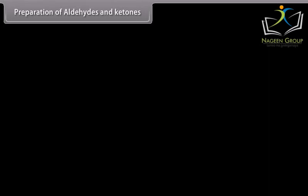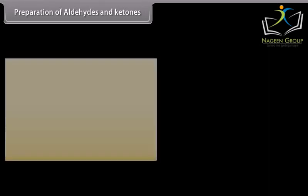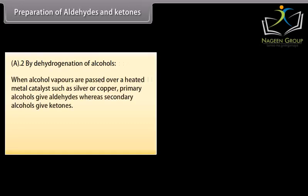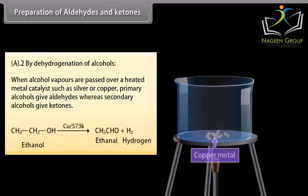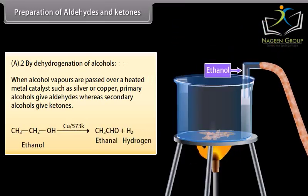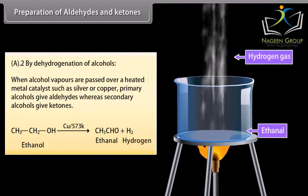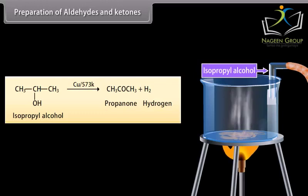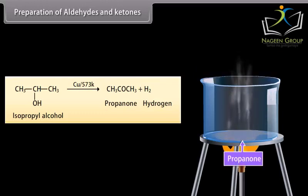By dehydrogenation of alcohols: when alcohol vapors are passed over a heated metal catalyst such as silver or copper, primary alcohols give aldehydes whereas secondary alcohols give ketones. When vapors of ethanol are passed over copper, ethanal is formed and hydrogen gas is released. When vapors of isopropyl alcohol are passed over copper, propanone is formed and hydrogen gas is released.